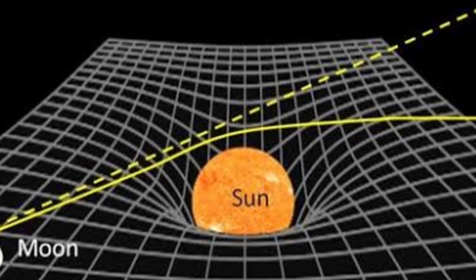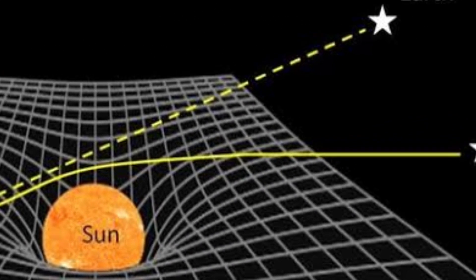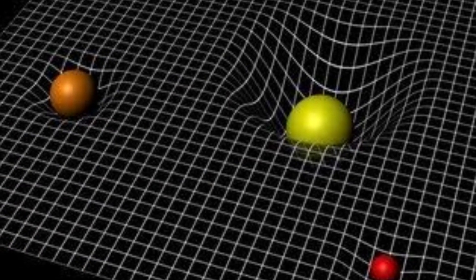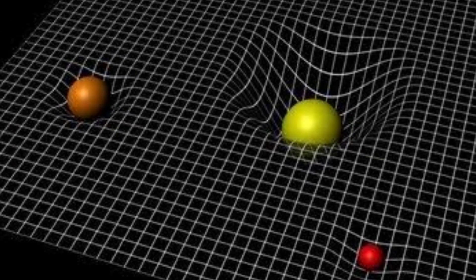Since light carries energy, as described by Einstein's E equals mc squared equation, it contributes to the curvature of spacetime and is therefore affected by gravity.